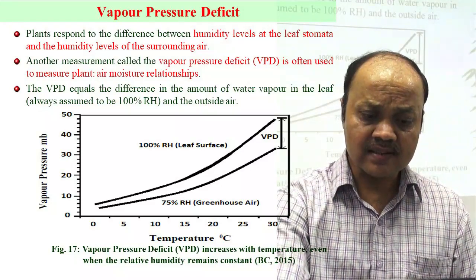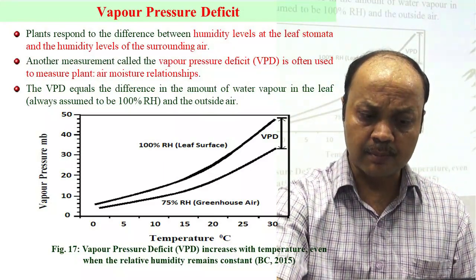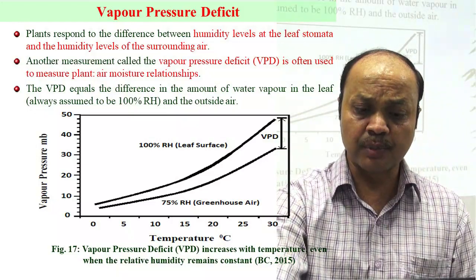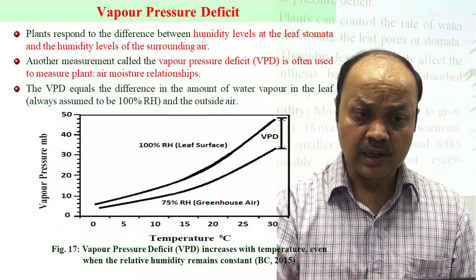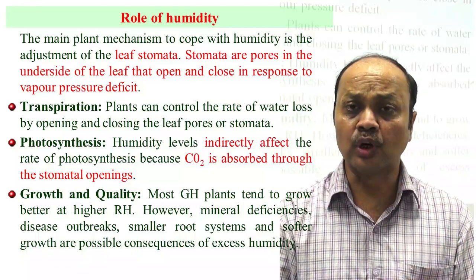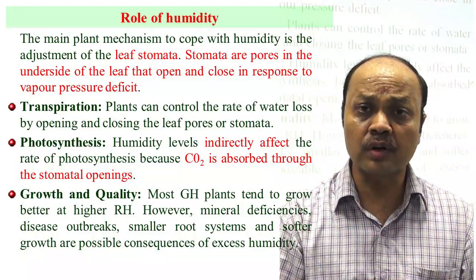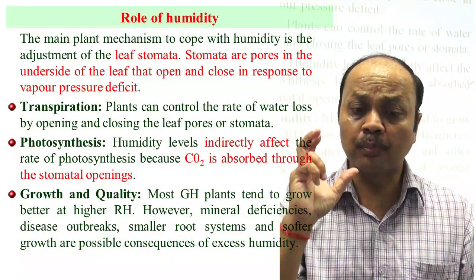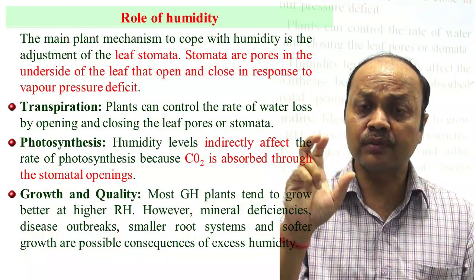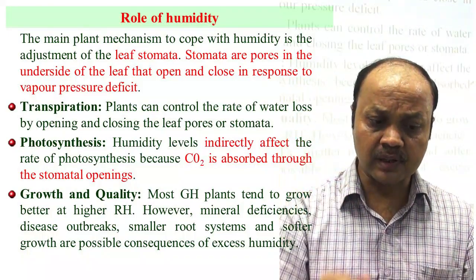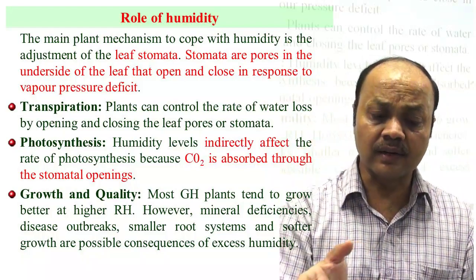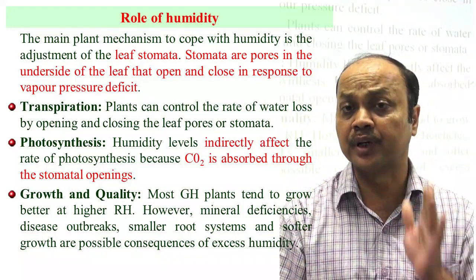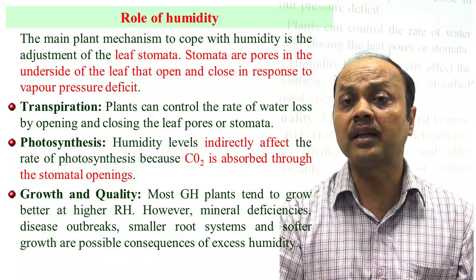From the picture you can see that when greenhouse air is at 75% RH and the leaf is assumed to be at 100% RH, as temperature increases the vapor pressure difference increases. This affects transpiration and indirectly affects photosynthesis because vapor pressure difference influences stomata — the pores in the leaf — and their opening. Growth and quality of the plant are also affected by relative humidity, so it is very important to maintain appropriate RH inside the greenhouse structure.